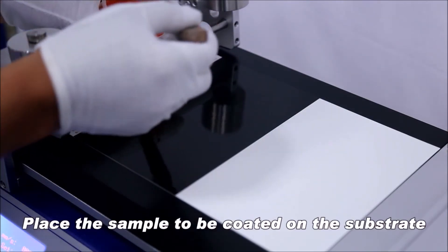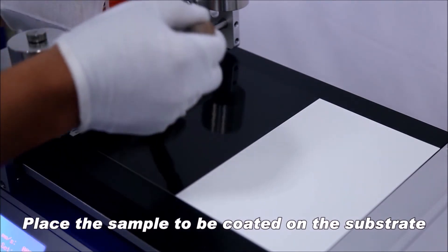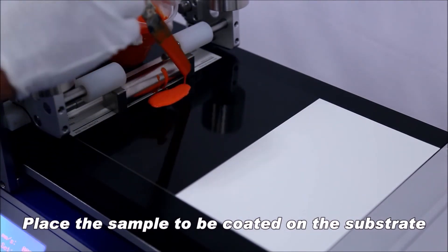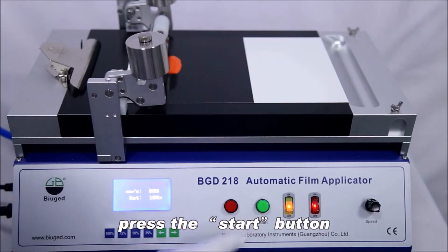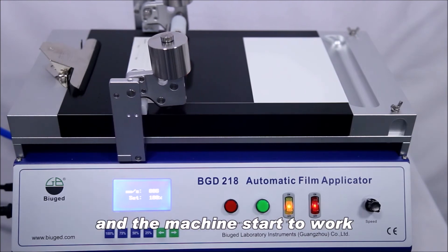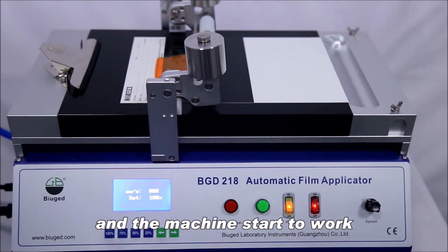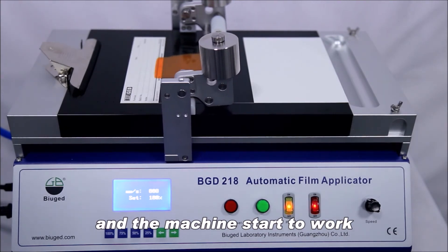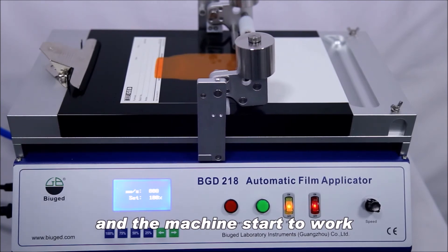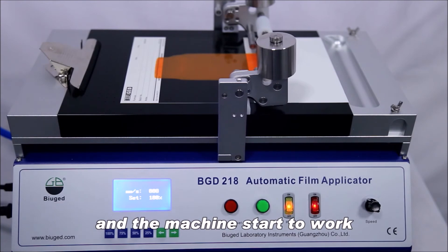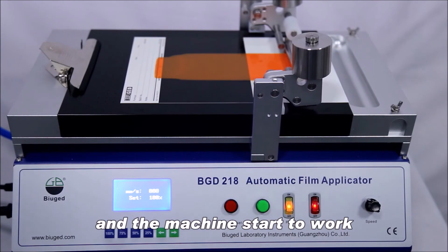Step 4: Place the sample to be coated on the substrate. Step 5: Press the start button and the machine starts to work.